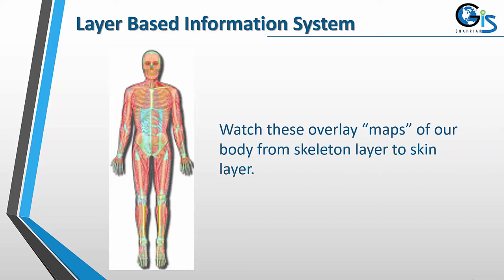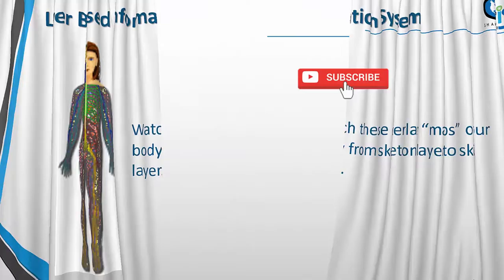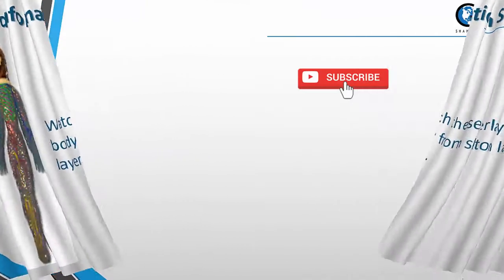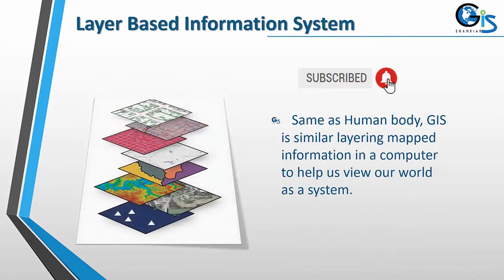GIS is a layer-based information system. Watch this — overlay maps of our body from skeleton layer to skin layer. Same as the human body, GIS is similar, layering map information in a computer to help us view our world as a system.